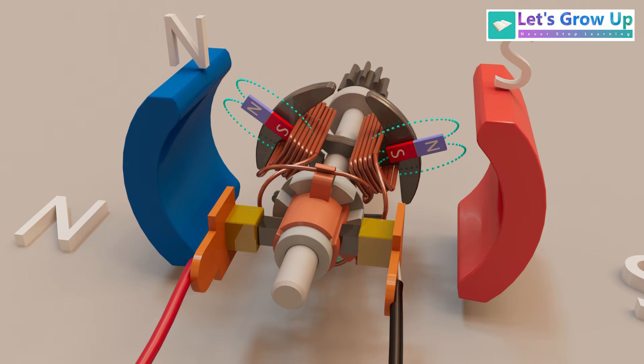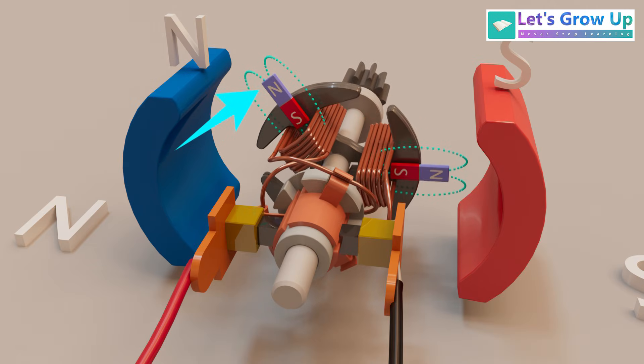And opposite poles pull together. Now, the north poles of magnets repel each other, and opposite poles attract.